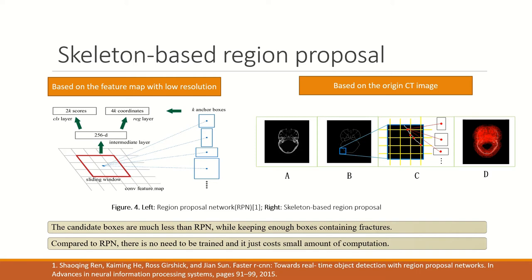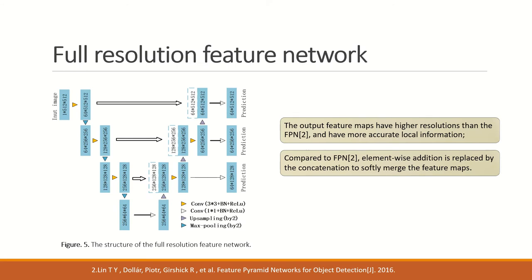In Faster RCNN, all candidate boxes share the same feature maps. Then some researchers proposed FPN, where boxes with different sizes are estimated by different feature maps. This is because for small boxes, local information is very important, which is lost in high-level feature maps. However, in FPN, the output feature maps cannot achieve the same size as the original image, so local information is still partially lost.